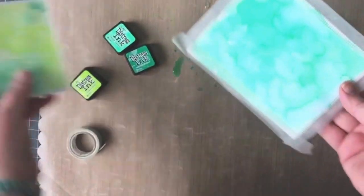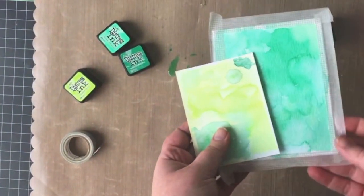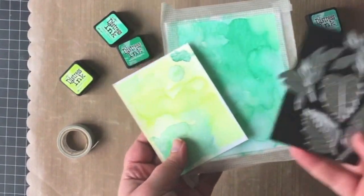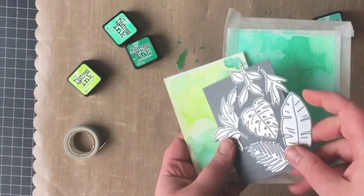Here is the finished watercolor panels, lots of variation in them, and now I'm going to die cut them with the greenery dies.